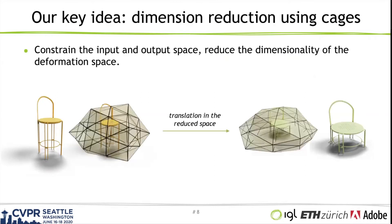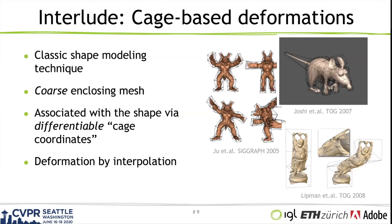Our idea instead is to improve the deformation by reducing the dimensionality of the deformation space. We do so by representing the input and output with a much coarser mesh called cage. This is inspired from a classic interactive shape modeling technique. Each of the cage vertices is associated with the underlying shape using the so-called cage coordinates. Deformation is driven by offsetting the cage vertices. The deformed shape is obtained by interpolating the shape vertices using the coordinates. While conventionally the cages are created by artists manually, I'll show you how we automatically create these cages for arbitrary input shapes.